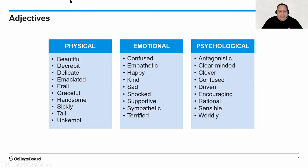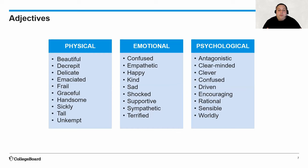We want to be as precise as possible when we talk about these characters. These words are not meant to be housed in these three categories exclusively. For example, the word 'confused' appears under both emotional and psychological — I've done that on purpose so you can see we can use these words across the three aspects. Also note these are not the most sophisticated words; you don't have to use words nobody can understand. When we use language that is understood by all, as long as it is precise, we really captivate our audience with our analysis.